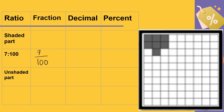Next, decimal. Since it's over 100, it is 7 hundredths, written as 0.07. If the fraction is not over 100, we divide it. But since it's over 100, we write it as 7 hundredths. Into percent: 7 percent. Why not 0.7 percent? Because 0.07 times 100 — as a shortcut, we move the decimal point two places to the right: 1, 2 — and instead of a decimal point, we put the percent sign.